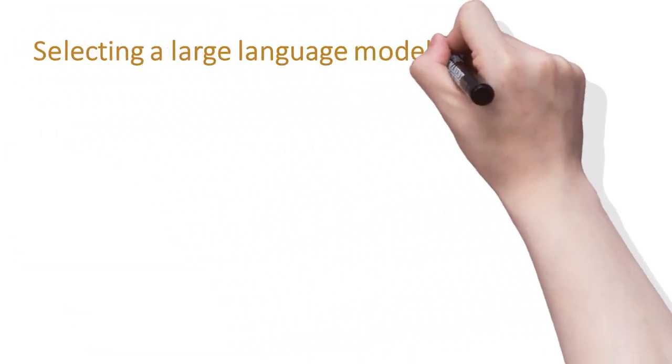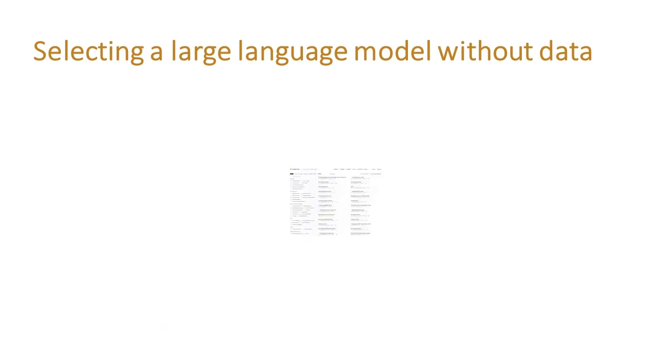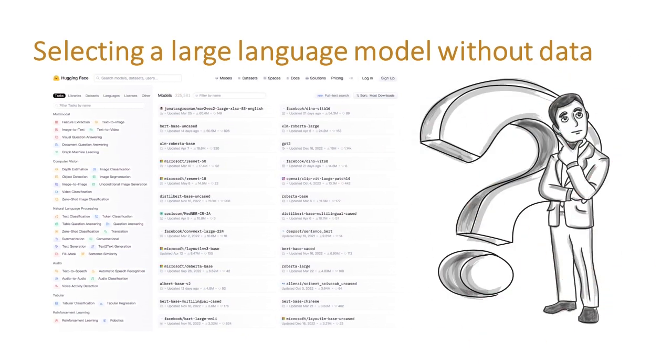Language models have been applied to automatic coding, chatting bots, and even mathematical proofs. On Hugging Face, to the date of this video, there are about 200,000 models. Which one should you use for your task?